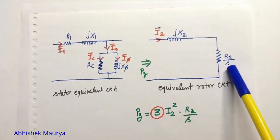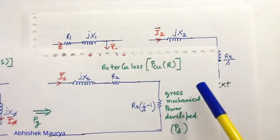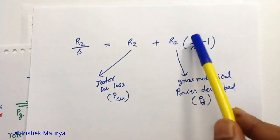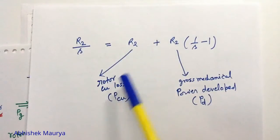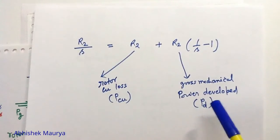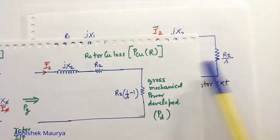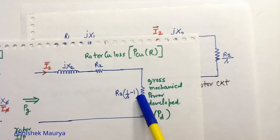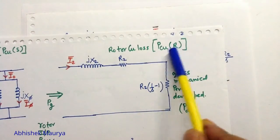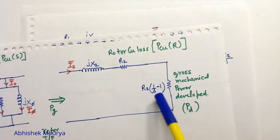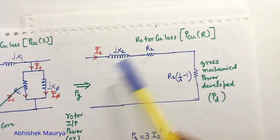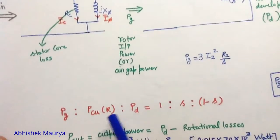Now I want to split r2 upon s. The r2 upon s can be split as r2 plus r2(1/s − 1). Here r2 represents the rotor copper loss Pcu, and r2(1/s − 1) represents the gross mechanical power developed Pd. So r2 upon s is split into two parts: r2 and r2(1/s − 1).